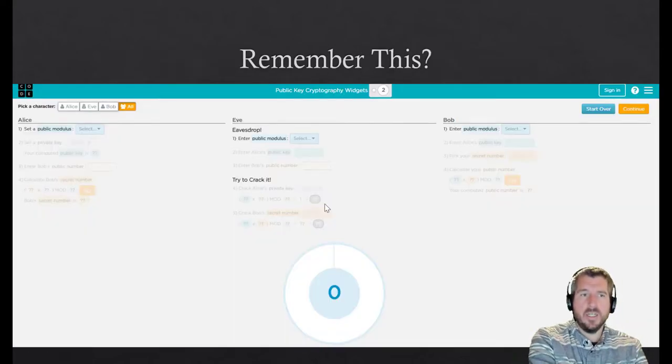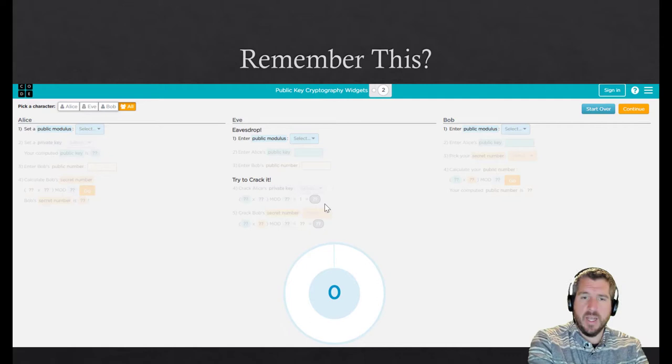Remember we did this with Alice, Eve, and Bob? Well, the problem is that quantum computers—one of the things they're really, really good at—would be cracking these private keys or the secret numbers. So we may have to really rethink our security once quantum computers are adapted more widely and able to do these problems quite easily.